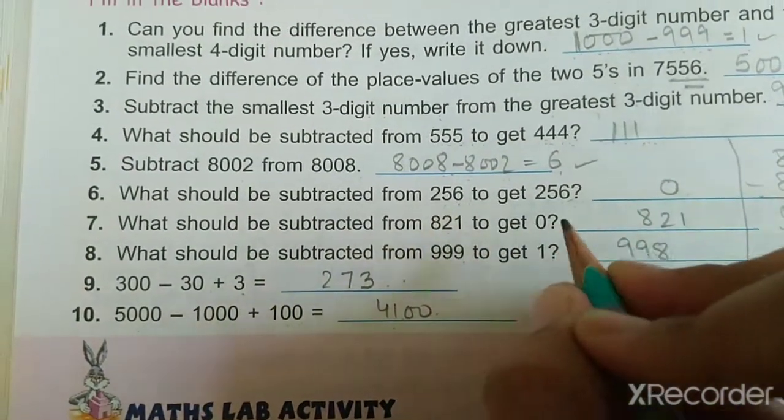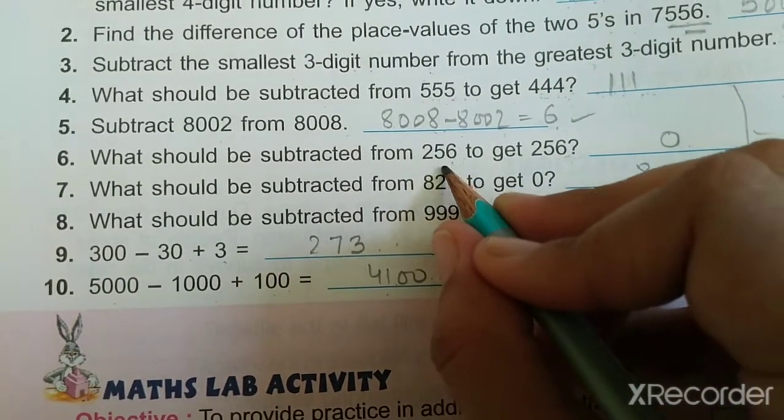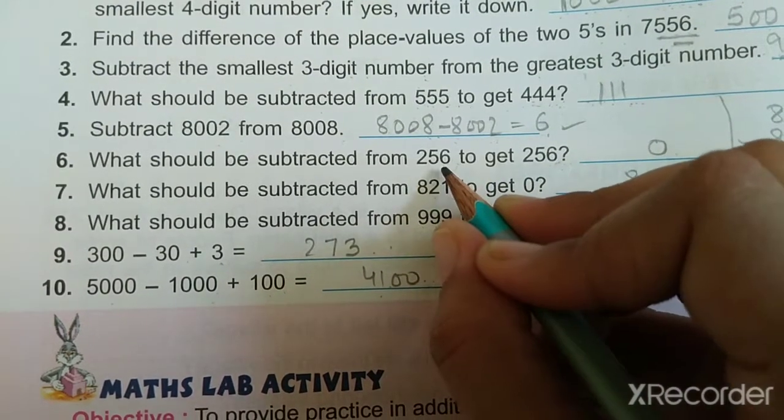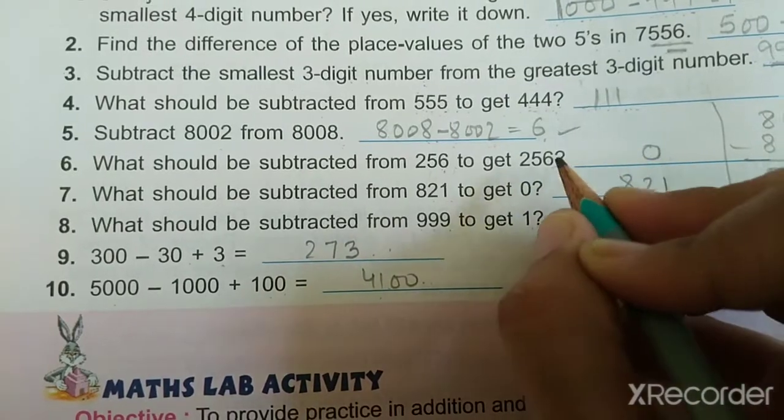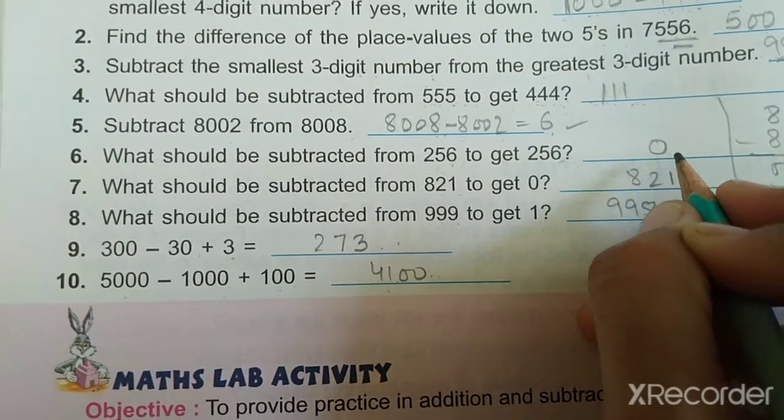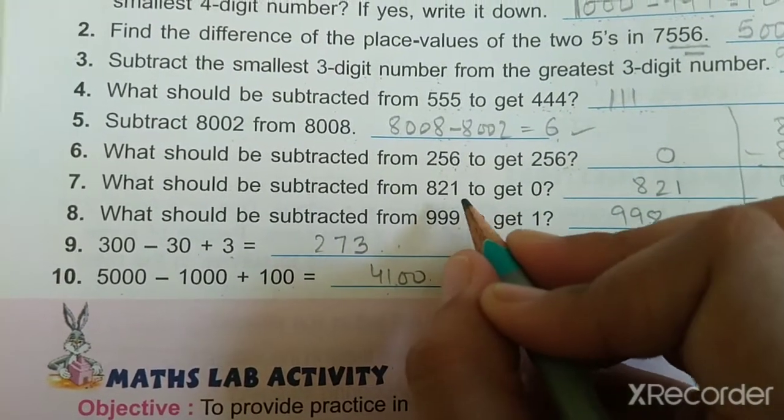What should be subtracted from 256 to get 256? Very clearly, if we subtract 256 from 256, then we will get 0. So 0 is the answer.